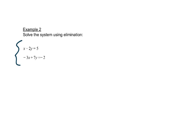Okay, we'll do the same thing here. So we're looking for something that has opposites in front of the letters. Well, if we look at the x's, we have a positive 1 and a negative 3. That doesn't have opposites. If we look at the y's, we have a negative 2 and a 7. That doesn't have opposites. So we have to decide how we're going to get opposites.